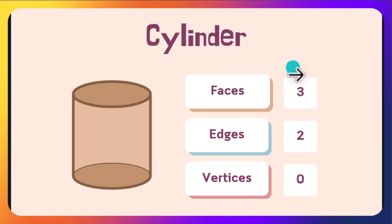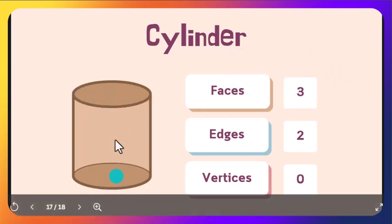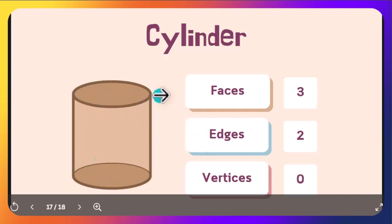A cone has two flat faces and one curved face. It has two edges, and there are no vertices.